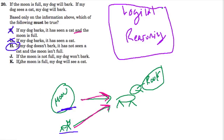If the moon is not full, my dog won't bark. Well that's not true either. Why? Because if the moon was not full but the dog saw the cat, then the dog would bark.